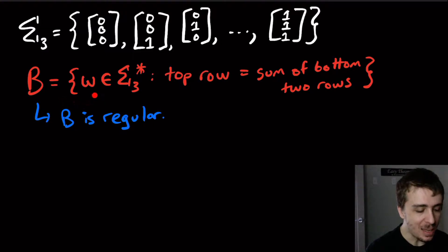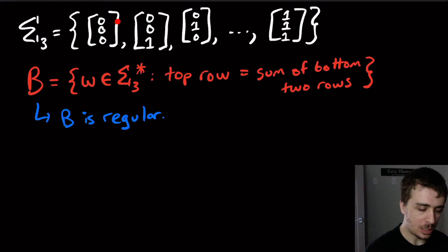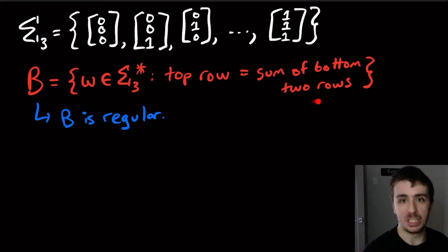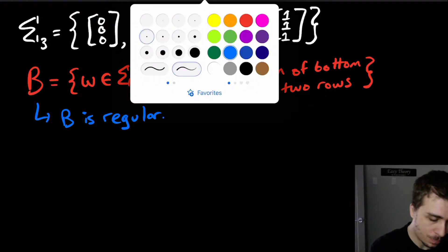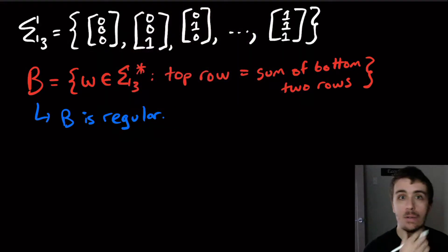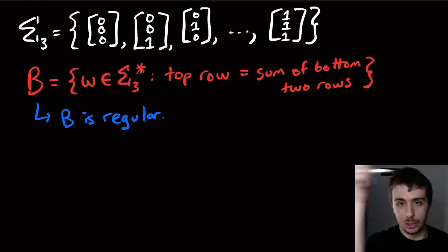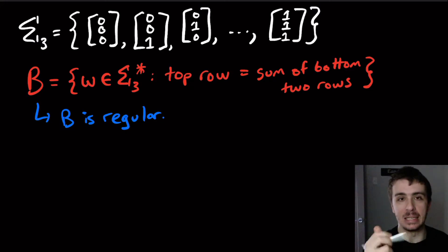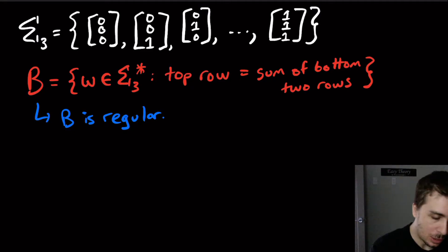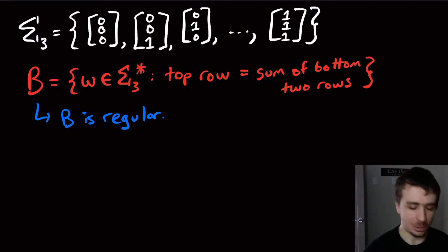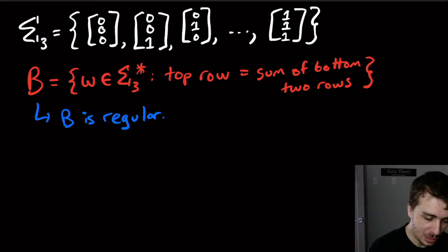This language B is going to be all the strings over this particular alphabet, such that the top row equals the sum of the two bottom rows. So if we put a whole bunch of these next to each other, we're going to have a string representing the top row, and that has to be the sum of the two bottom rows. Let's think of 2 plus 3, which is obviously equal to 5.